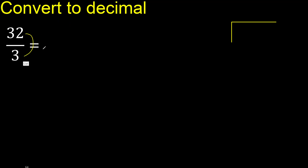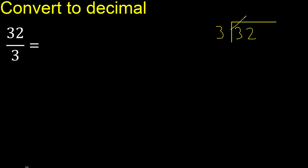32 divided by 3. 3 is not less, therefore with 3. 3 multiplied by which number is nearest to 3 but not greater? 3 multiplied by 2 is 6 — 6 is greater. 3 multiplied by 1 is 3 — here it is not greater.